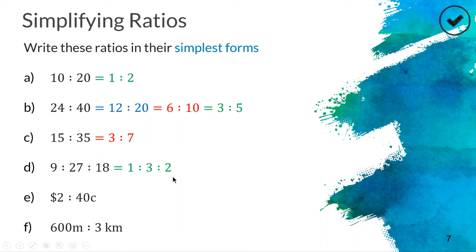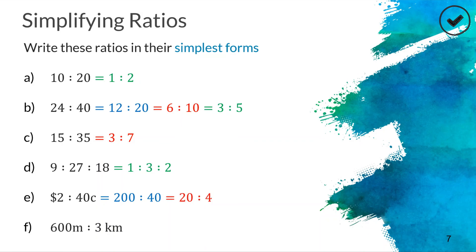For the last two questions we have units. A simplified ratio should not have any units in the answer, so first we write both sides in the same units. The left side is $2 and the right side is 40 cents — we rewrite $2 as 200 cents. Now we have 200 to 40. Divide by ten to get 20 to 4, cut in half to get 10 to 2, then cut in half once more to get a final simplified ratio of 5 to 1.